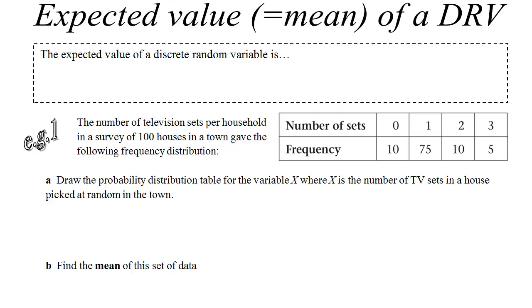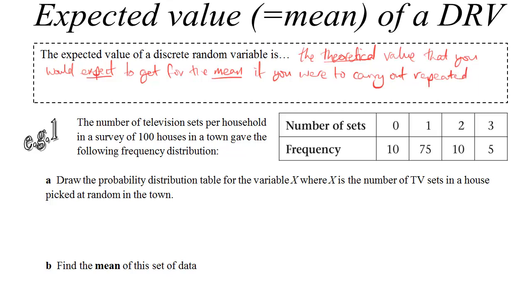Hi folks. Welcome to the second lesson on discrete random variables. We're introducing a new concept to do with discrete random variables, which is the expected value. It has this definition: it's the theoretical value which you would expect to get for the mean if you were to carry out repeated experiments.